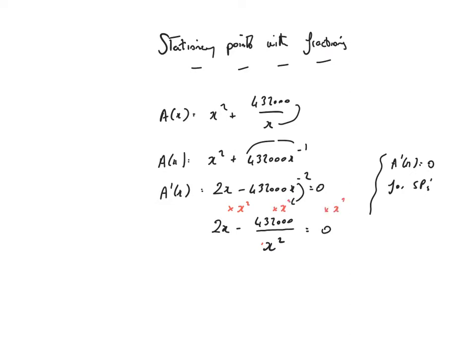We've got the luxury of doing that because 0 times x squared will still give me 0. So 2x times x squared is 2x cubed. And then that divide by x squared will cancel with times by x squared and just leave me with minus 432,000. And then 0 times x squared is still 0 and I'm now going to bring that across and that's 2x cubed is equal to 432,000.